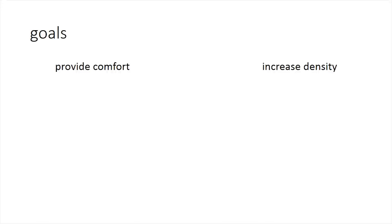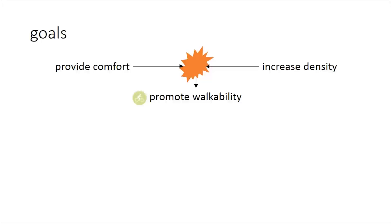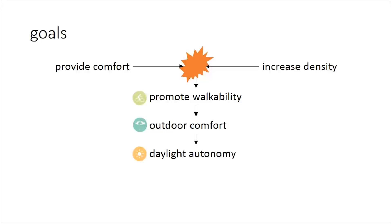Based on our visit, we developed two goals: one, to provide comfort, and two, to increase density. At first these two goals appear to be conflicting. However, we can meet both of them by promoting walkability within the neighborhood. In order to promote walkability, we also need to design to improve outdoor comfort. This in turn requires that we consider the daylight performance of the neighborhood, and finally, we also consider energy intensity use.